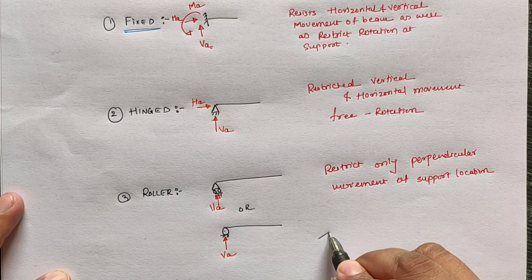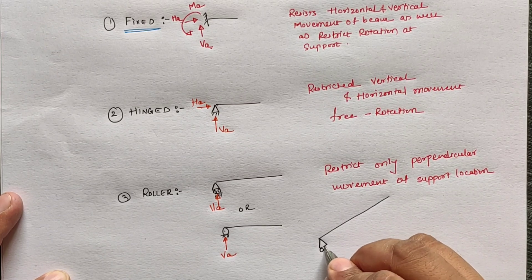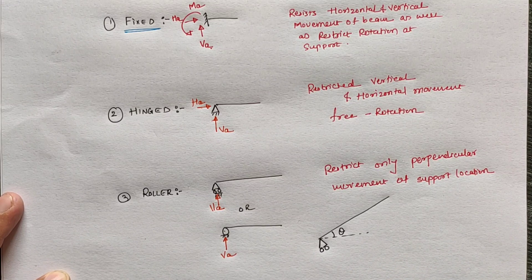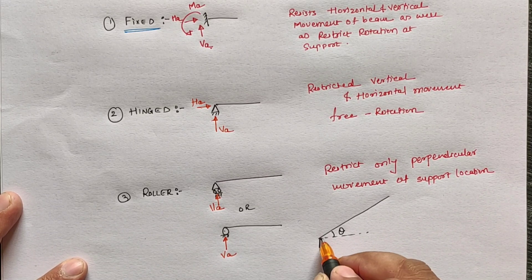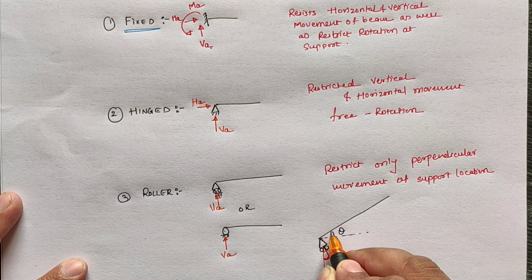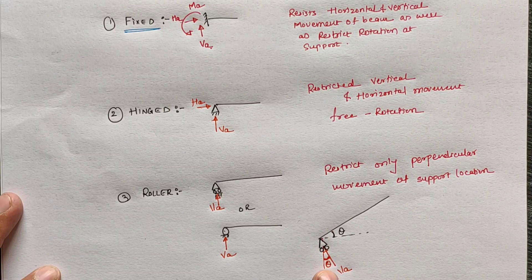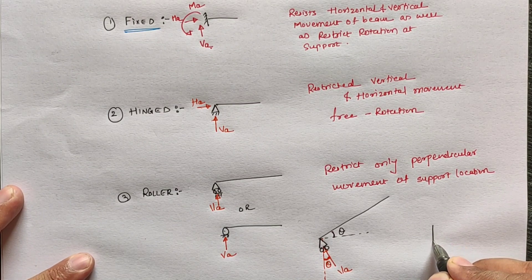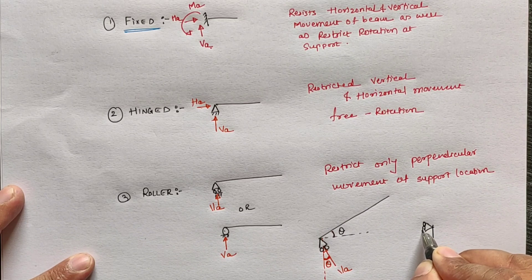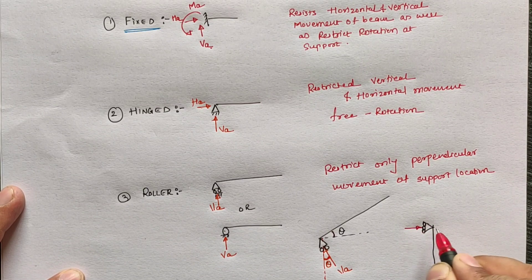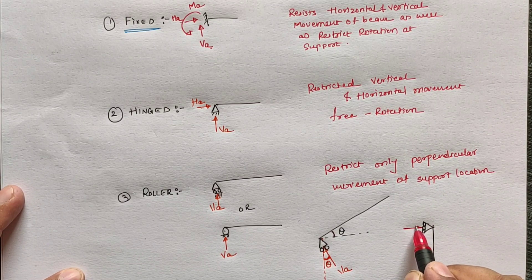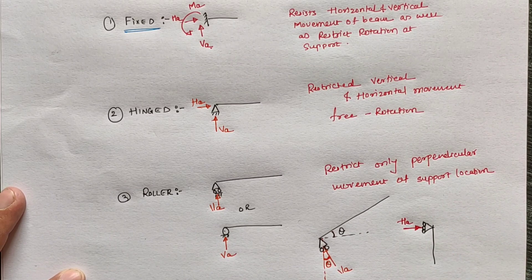For an inclined beam at angle theta, roller support restricts only perpendicular movement, so we have a perpendicular reaction VA which makes an angle with the vertical direction similar to the angle of inclination theta. Similarly, if roller support is provided at a column, the perpendicular reaction is horizontal, indicated as H.